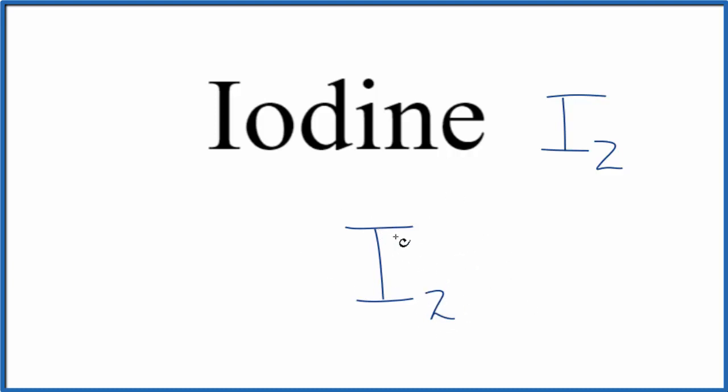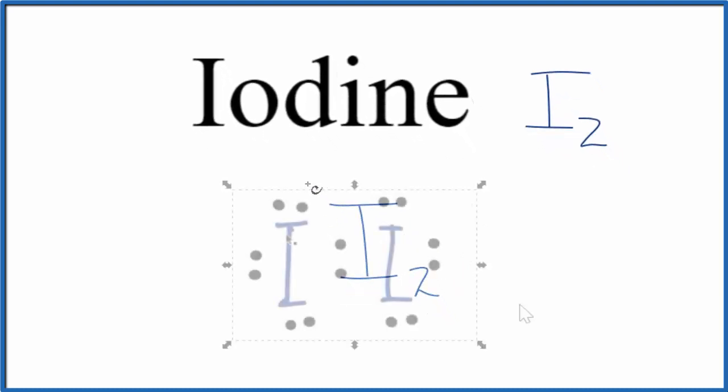Let's look at the Lewis structure for iodine to maybe understand that a little better. So this is our Lewis structure for iodine. Iodine is in group 17, so it has seven valence electrons. Since we have two, we have 14 total valence electrons. These two, that's the chemical bond between the iodine atoms. Then these are lone pairs here.